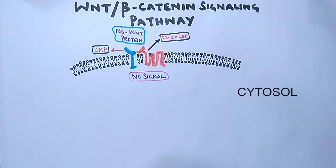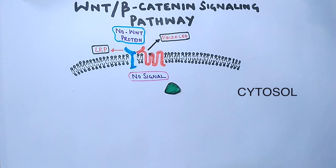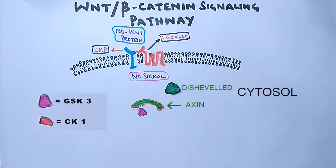Within the cell we have some components of the pathway. First we have dishevelled protein in the cytoplasm, then we have axin protein, then we have GSK3 protein, and also we have CK1 proteins assembled together.